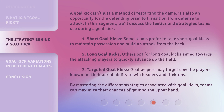A goal kick isn't just a method of restarting the game — it's also an opportunity for the defending team to transition from defense to attack. In this segment, we'll discuss the tactics and strategies teams use during a goal kick. 1. Short Goal Kicks: Some teams prefer to take short goal kicks to maintain possession and build an attack from the back. 2. Long Goal Kicks: Others opt for long goal kicks aimed towards the attacking players to quickly advance up the field. 3. Targeted Goal Kicks: Goalkeepers may target specific players known for their aerial ability to win headers and flick-ons. By mastering the different strategies associated with goal kicks, teams can maximize their chances of gaining the upper hand.